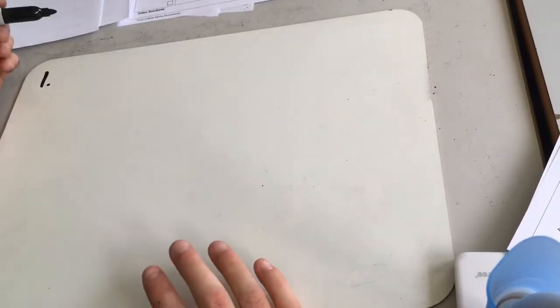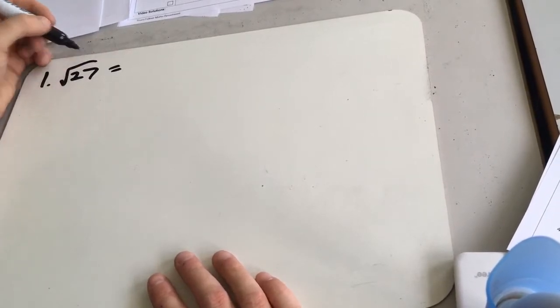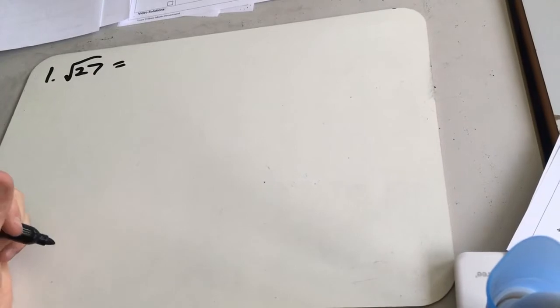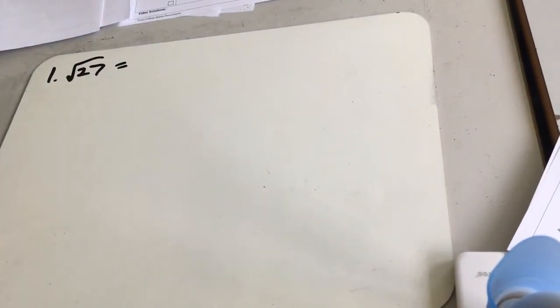Okay, so exercise 3 now, we're looking at simplifying some surds. So we've got root 27 first of all. We're always trying to split these up into a prime number times another number, or a prime number or a square number even better.